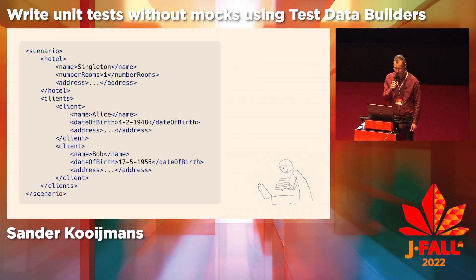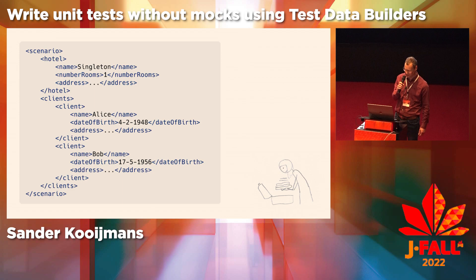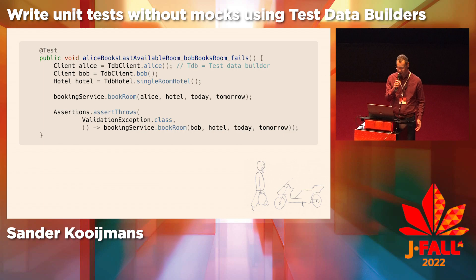Each test starts with an empty database, so each test must store data in a database. You can use XML files, JSON files, or SQL files for this — but don't do that! This is a complete unit test for the requirements using test data builders. The methods Alice, Bob, and single room hotel each create objects with realistic data and store them in a database.